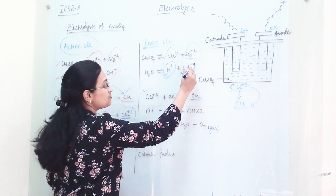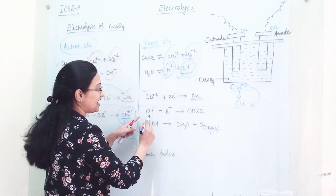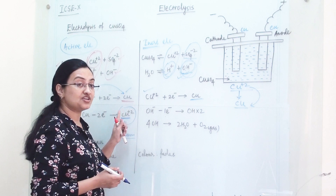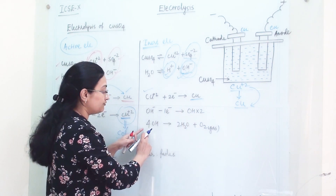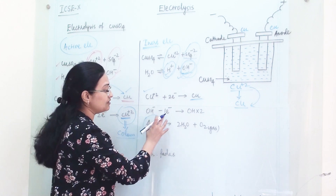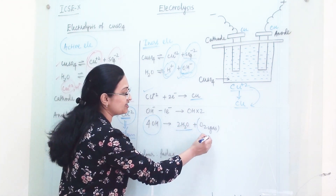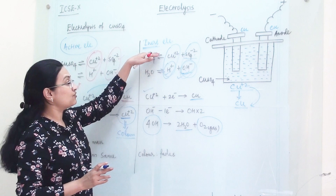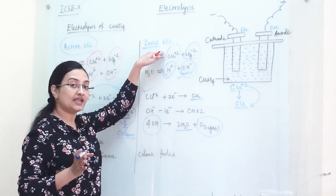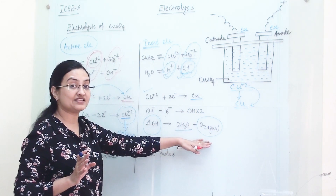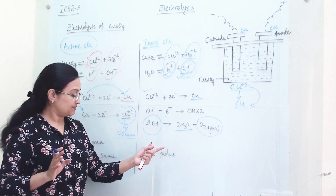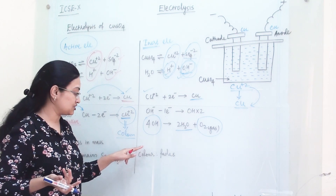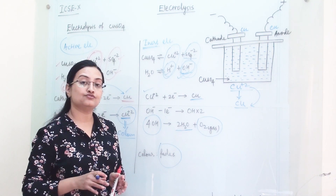From SO4²⁻ and OH⁻ at the anode, OH⁻ ion will get preference and will discharge, giving us hydroxyl radicals. These four hydroxyl radicals will become two molecules of water and will generate one molecule of oxygen gas. So when the electrode is inert and not taking part in cell reaction, we will get oxygen gas as the anode product. The anode will not diminish in mass because it is not taking part in the cell reaction.